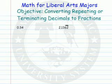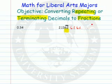In this video, we're going to convert repeating or terminating decimals into fractions. Every decimal that repeats — for example, one that goes 6, 2, 6, 2, 6, 2 — or a terminating one, which terminates because there's nothing after a certain point but zeros, can be changed into a rational number, a fraction.